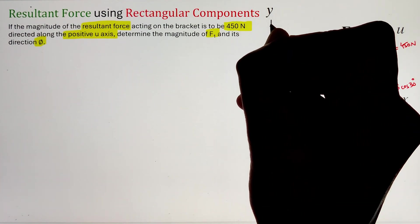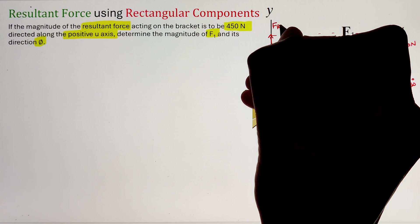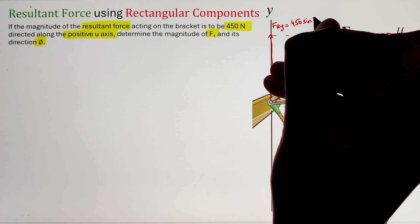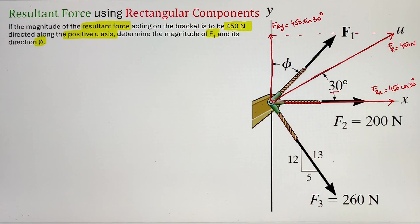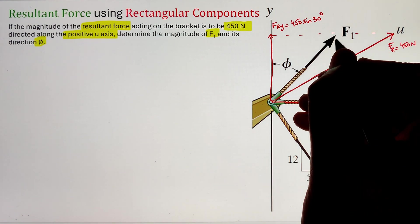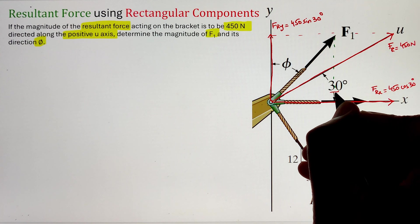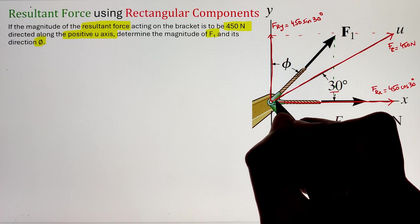Once we have the resultant force identified, next we can go ahead and divide individual F1, F2, and F3 along its x and y-axis. To start, our F1 force is making an angle phi with respect to the y-axis. That means if I take the sine function of that angle phi, it will give me my component along the x-direction.